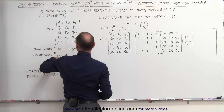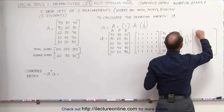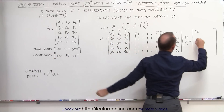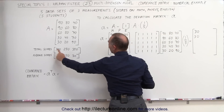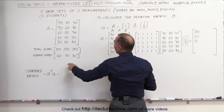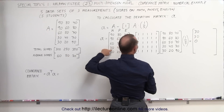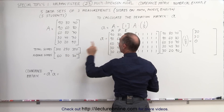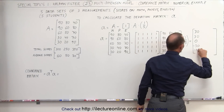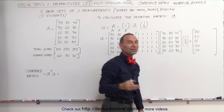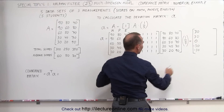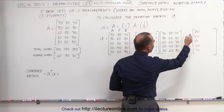When we compute the deviation for math, we get 90 minus 60, which is 30. Again, 90 minus 60 is 30. Then 60 minus the average 60, which is 0. Then 30 minus the average 60, that is minus 30. And 30 minus 60, which is also minus 30. So these are the differences between the mean and the scores of individual students. When scores are less than the average we get a negative; when scores are bigger than the average we get a positive.